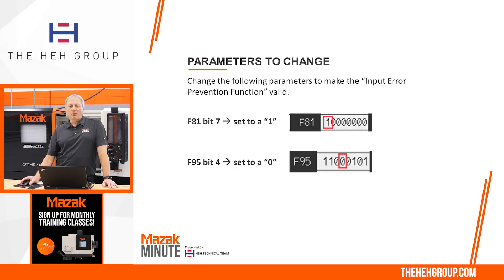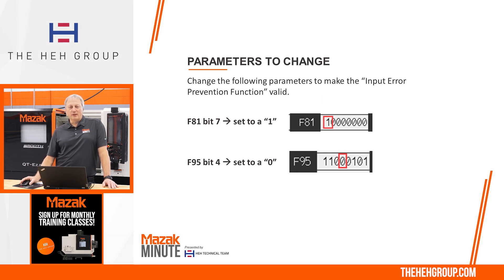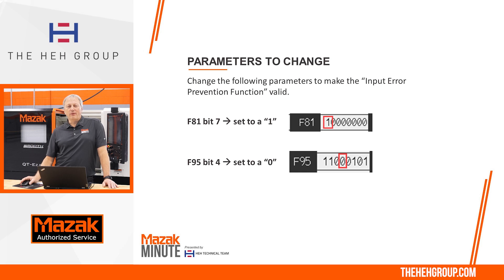The first parameter to look at is F81, bit 7 — the furthest left bit. If you look at the screen, you'll see the 1 all the way on the left in a square. From the factory, that's set to a 0, and you need to change that to a 1.